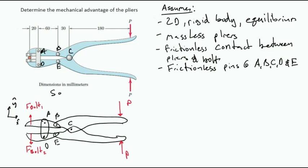Other assumptions that I've made in my free body diagram: this is a massless plier, 2D, rigid body in equilibrium, and there are frictionless pins A, B, C, D, and E.